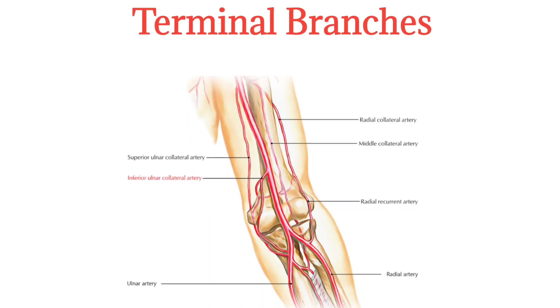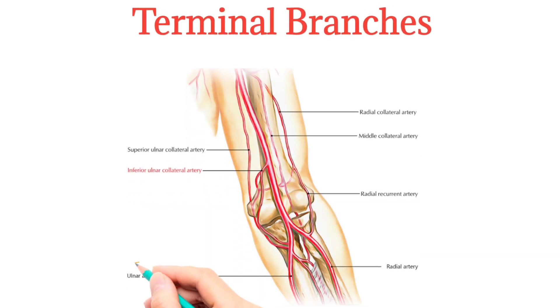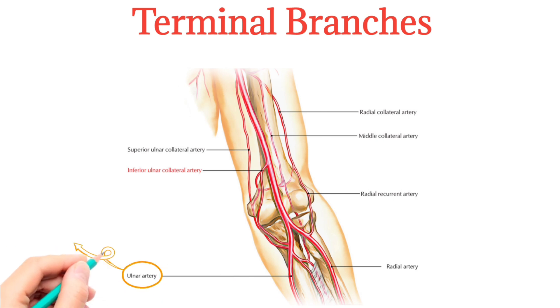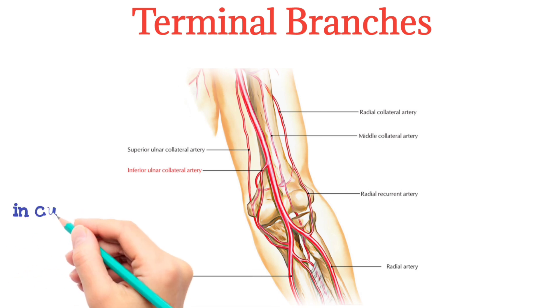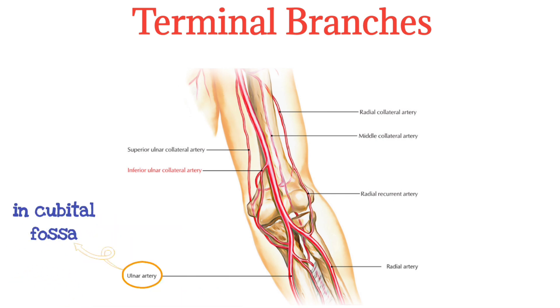There are two terminal branches of the brachial artery. The ulnar artery originates in the cubital fossa and runs distally between the second and third layers of the forearm flexor muscles. It provides vascular supply to the ulnar aspect of the flexor compartment.